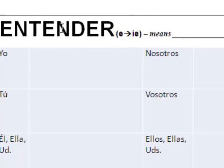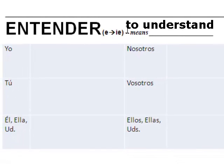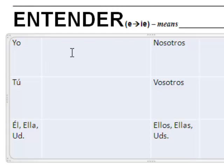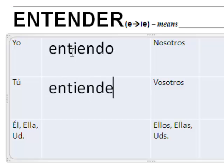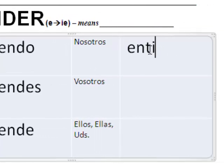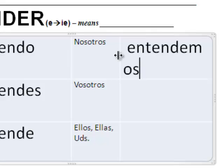Next verb: entender, to understand. It's an e to ie stem changer. How do you say I understand? Entiendo. ¿Entiendes la lección? Sí, entiendo. How do you say I don't understand? No entiendo. How do you say you understand? ¿Entiendes? And if usted understands? ¿Entiende? Nosotros — no stem change — entendemos.